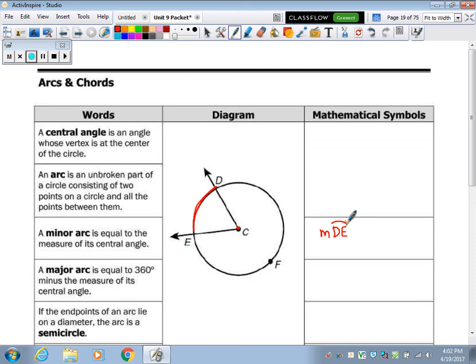So if it's a minor arc, like this red one is called a minor arc, it's equal to this angle. So let's call this 80 degrees. So that makes that arc 80 degrees.